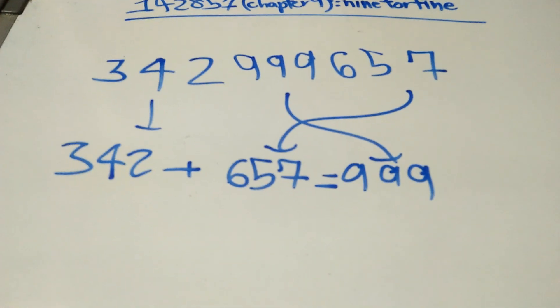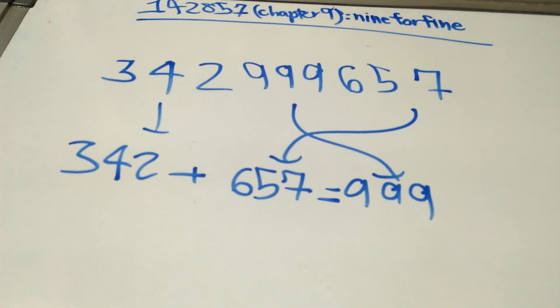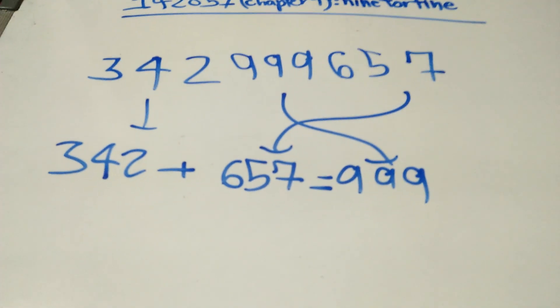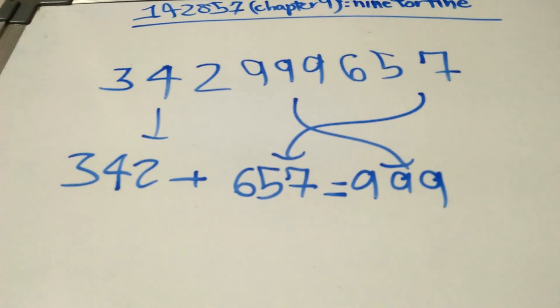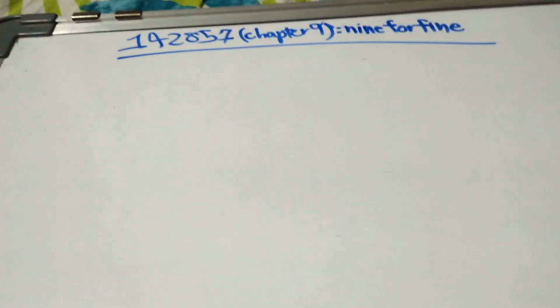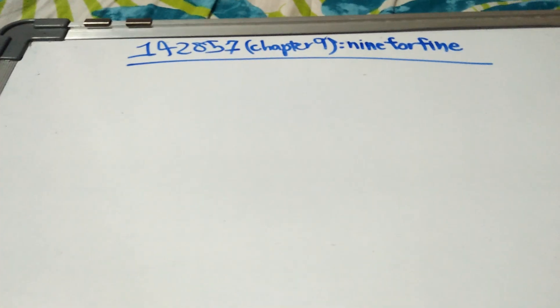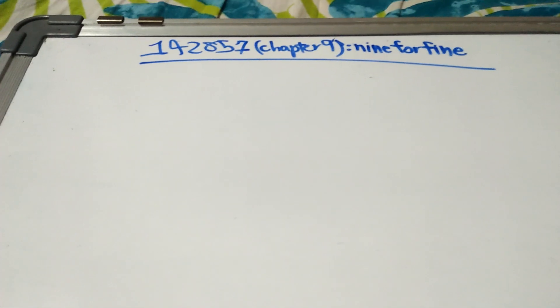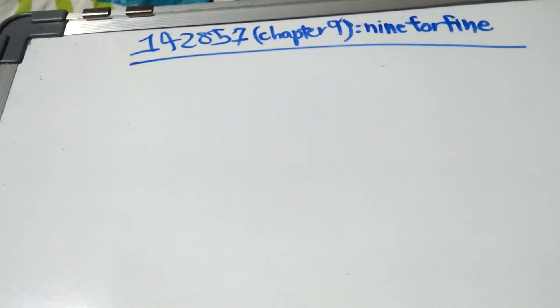You get into how these hard sums work, but these types of sums are good for understanding nines. I've kept this nine here because we are going to talk about nines and the number 142857.